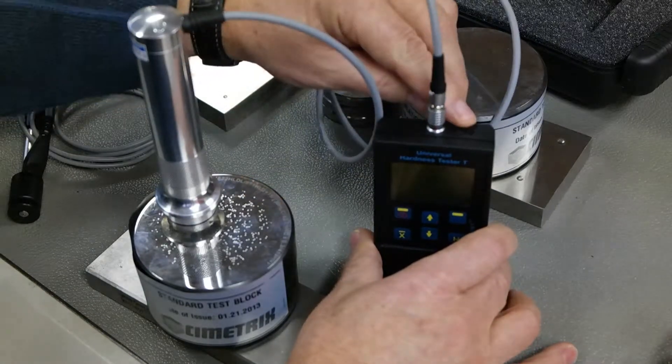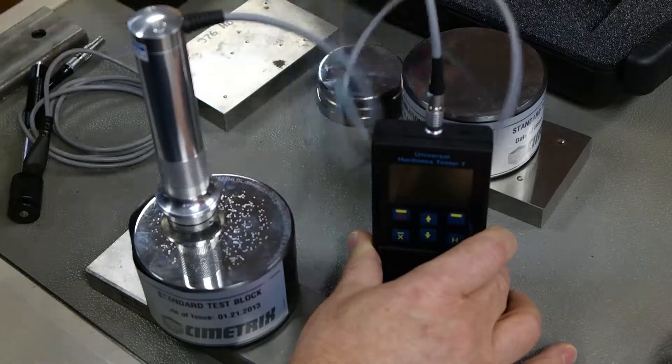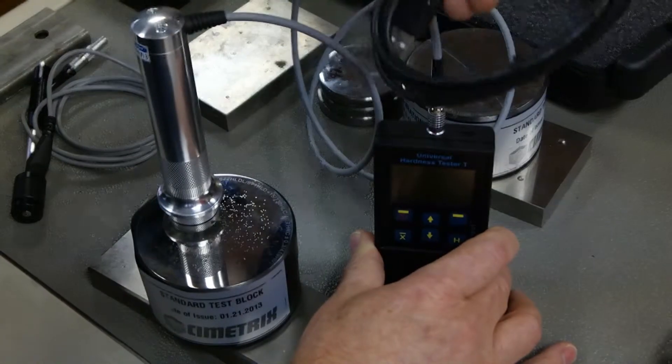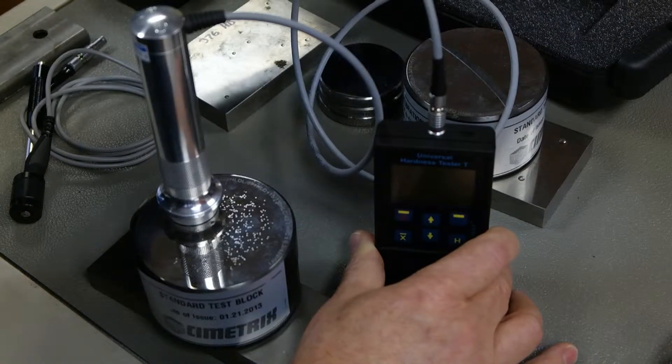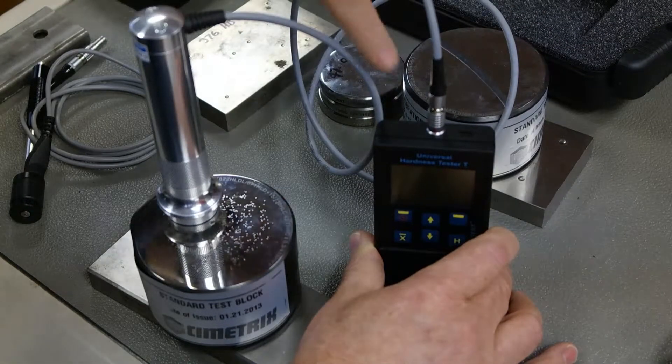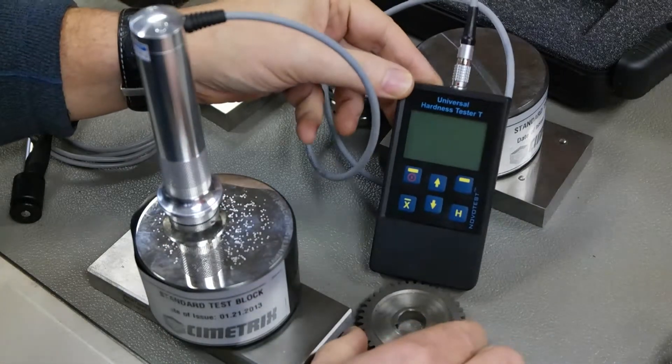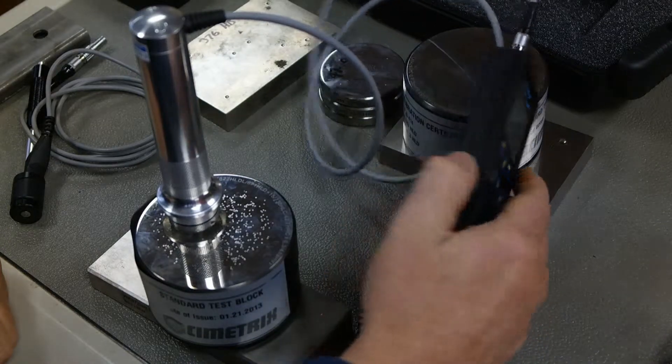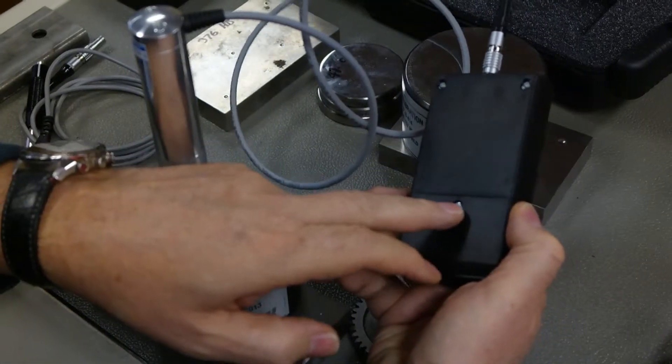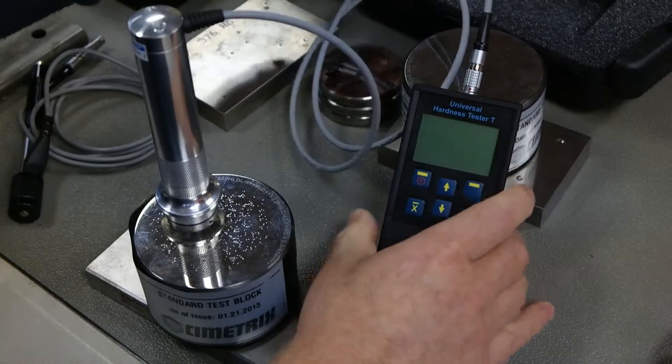On top of the unit we have a port for the USB cable to connect to a PC. We include the cable with the product and also the communication software. The other port is for the probe. It comes with rechargeable batteries which we include. There's a seal around the battery enclosure. On the back we even include a screwdriver to take the screw out for the batteries, and of course the charger.